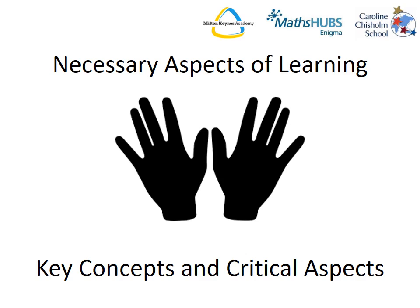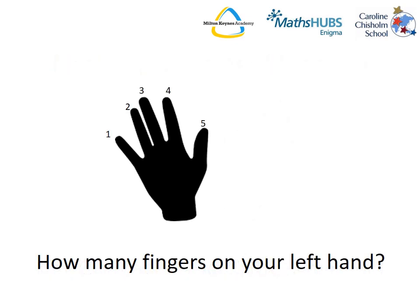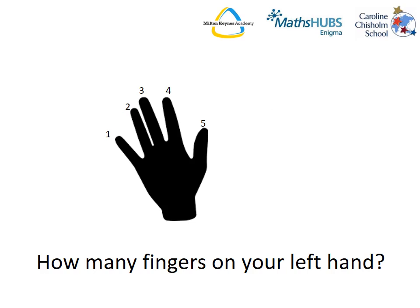Research shows that the necessary aspects of learning come from identifying key concepts and misconceptions and identifying the concepts that are critical. In 1987, Newman did research with 105 six- and seven-year-olds, and they were asked how many fingers they had on their left hand. Not surprisingly, all of them said five. But to her surprise, she found that three out of 105 children said they had ten fingers on their right hand.